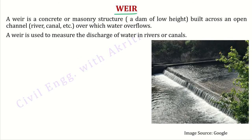So next aata hai weir. Weir kya hota hai? A weir is a concrete or masonry structure — material different ho gaya hai, concrete or masonry structure. Isko aap yeh bhi bol sakte hain ki yeh kya hai: ek dam hai jiski height bahut kam hai, a dam of low height, built across an open channel — ek open channel, jaise river ho ya canal ho, uske across aap banayenge — over which water flows. This is very important: weir jo hota hai, weir ke oopar se pani bahta hai.